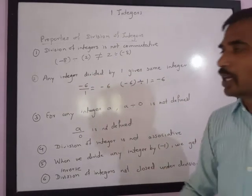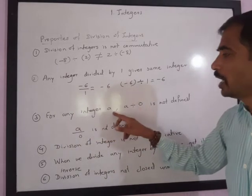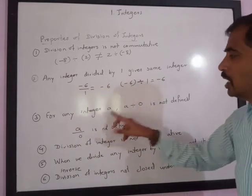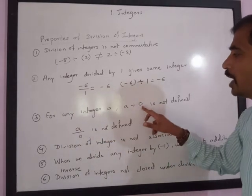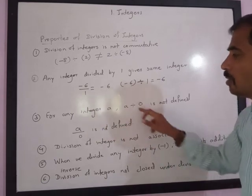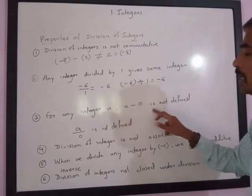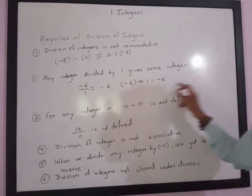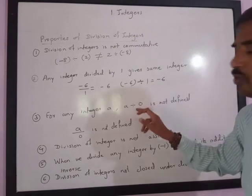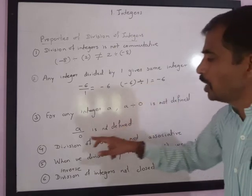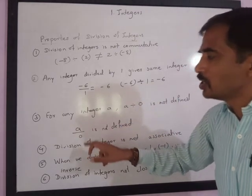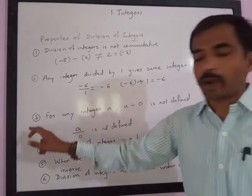The third property is that for any integer a, a divided by 0 is not defined — it is meaningless. We get a meaningless value if any integer is divided by 0.